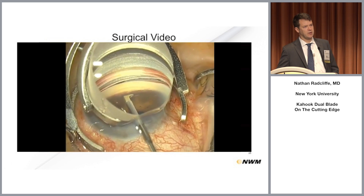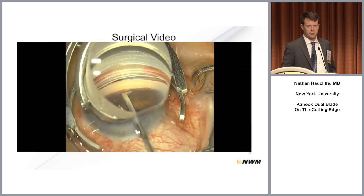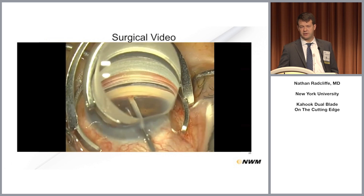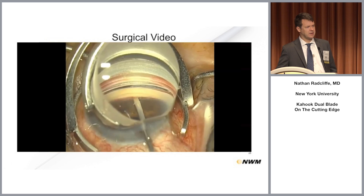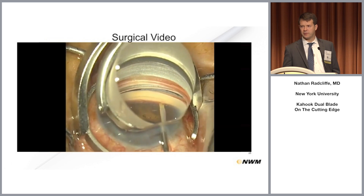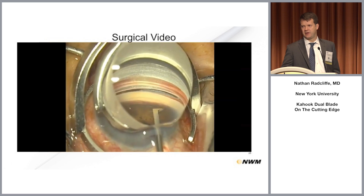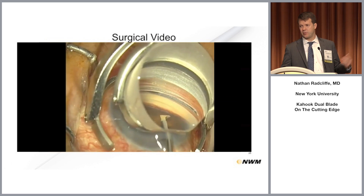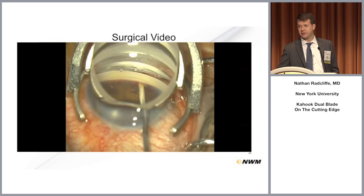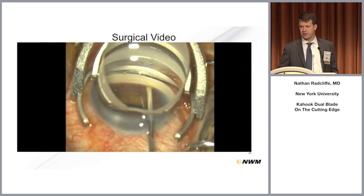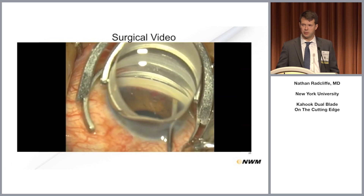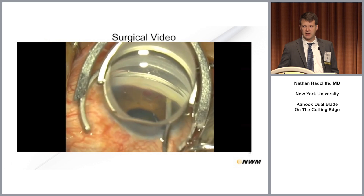Great question about anticoagulants. If you think about doing something more invasive like a trabeculectomy in someone who can't have their anticoagulants stopped, this probably is still a better option because choroidal hemorrhage is the last thing we want. But you can expect a little more bleeding in that case and may have a little more trouble.